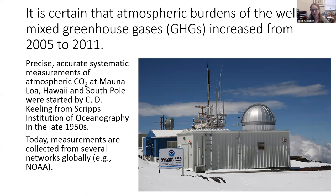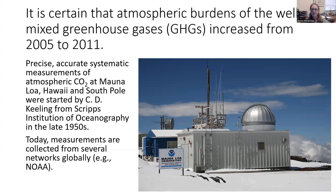Thinking about observations, it is certain that atmospheric burdens of well-mixed greenhouse gases have increased. Precise, accurate, systematic measurements of atmospheric carbon dioxide at Mauna Loa, Hawaii, and at the South Pole were started by C.D. Keeling from Scripps Institution of Oceanography in the late 1950s. Those two spots were chosen because they are so far from human development — they weren't just picking up CO2 wafts from a nearby city. Today, measurements are collected from several networks globally, but those two sites remain key long-term records.